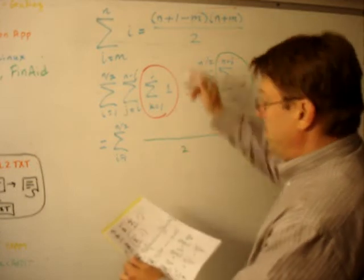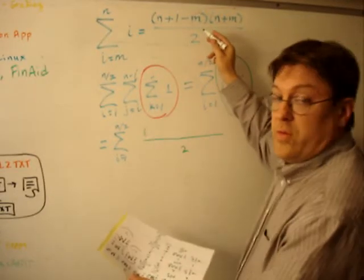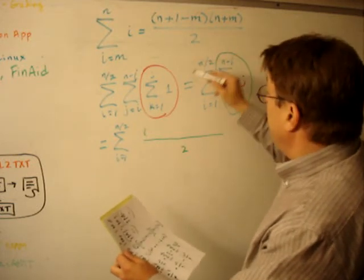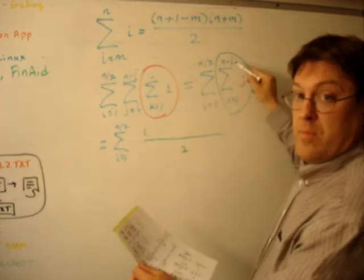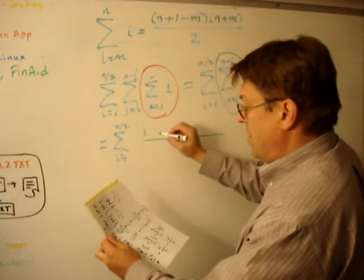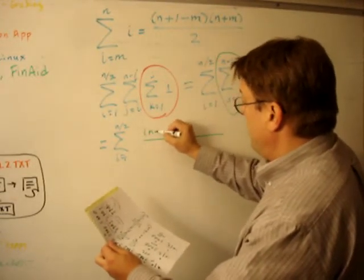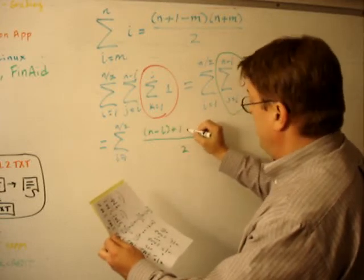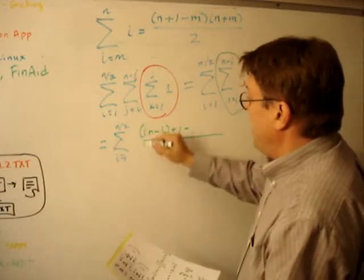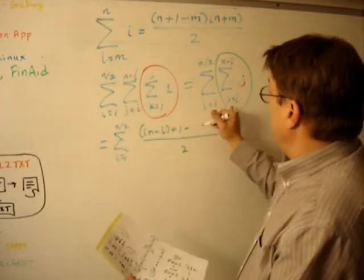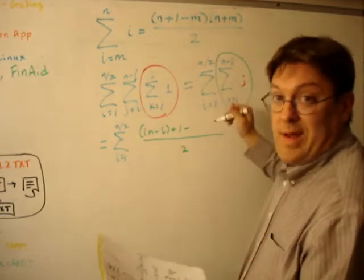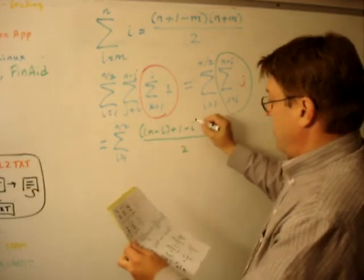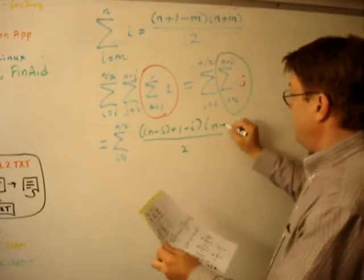It's going to be, here's n plus 1 minus m, but actually in this case n is n minus i. So it's going to be n minus i plus 1 minus, and in this case the m value here is i, so minus i times the quantity n minus 1,